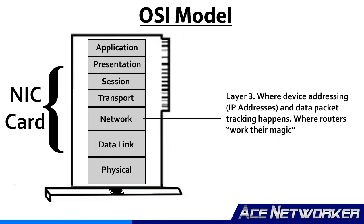Then you get into the network layer, also known as layer 3. So when we talk about layer 3 in networking, we're talking about the network layer. This is the layer where device addressing, IP addresses, network addressing, and data packet tracking actually take place. This is where routers tend to do their magic. Anything dealing with IP addresses and network addresses involves the network layer.